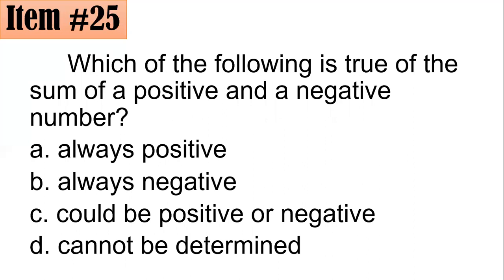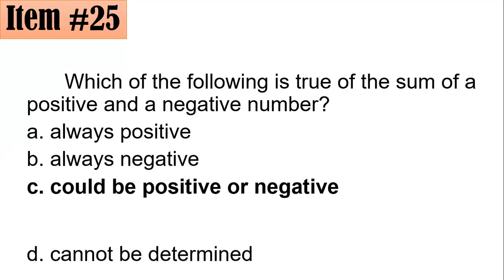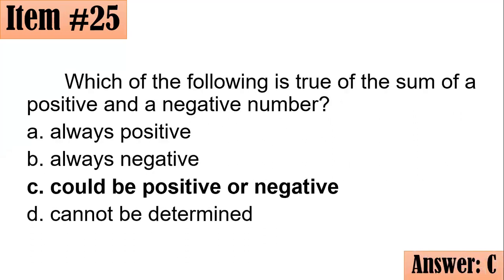Number 25. Which of the following is true of the sum of a positive and a negative number? Always positive, always negative, could be positive or negative, or cannot be determined. So which of these do you think? It's actually letter C.